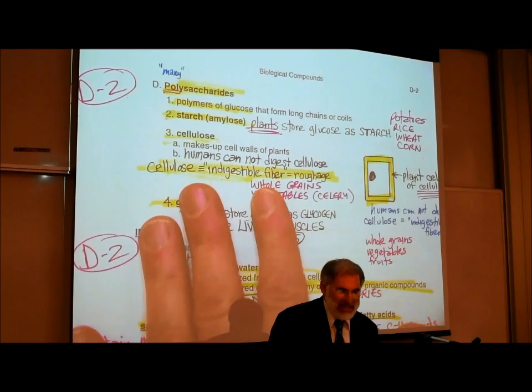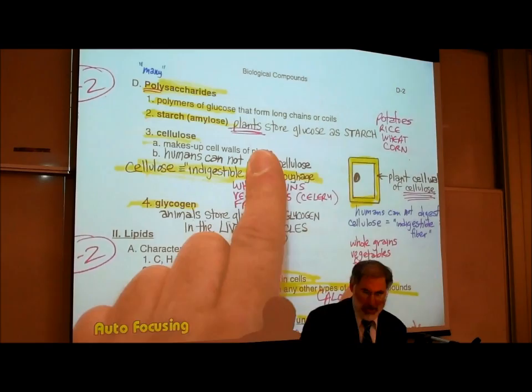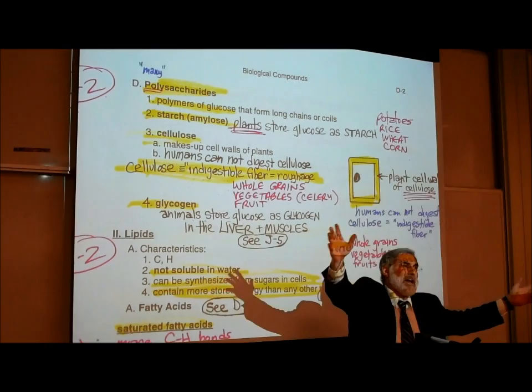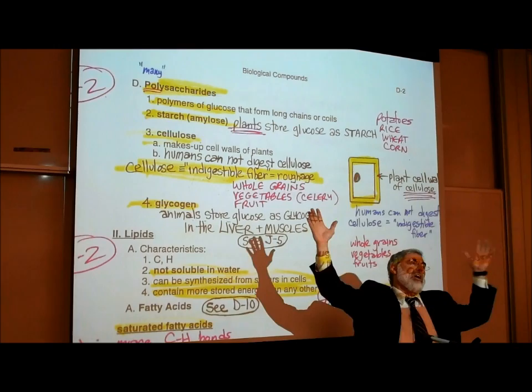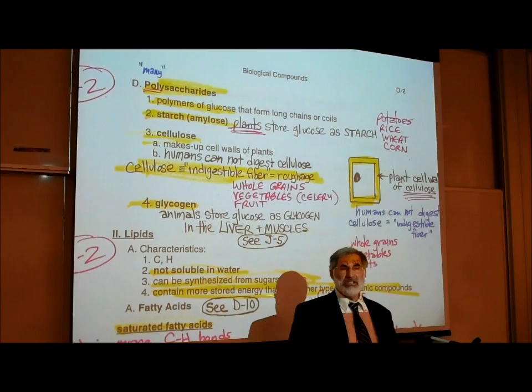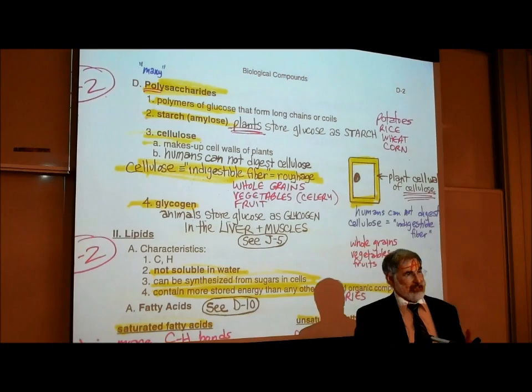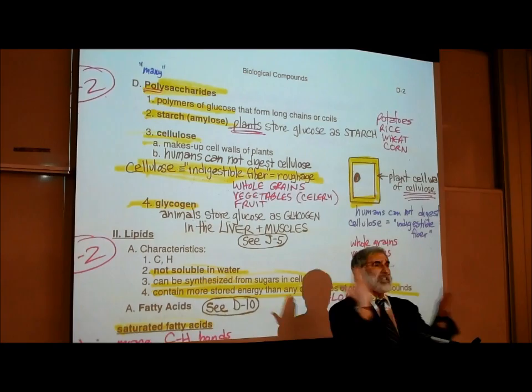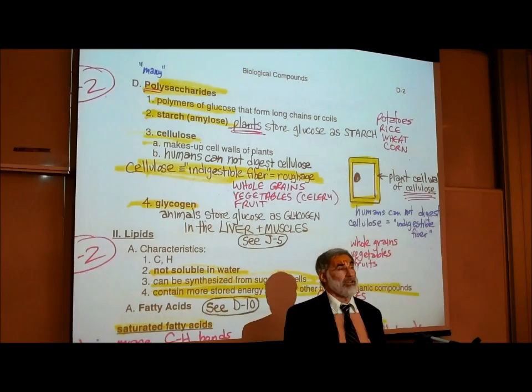Plants store glucose as starch. In the leaves of plants there are chloroplasts, and plants use their leaves to manufacture sugars using sunlight in a process known as photosynthesis — photo means light. As plants make glucose, they join these glucose molecules together into a storage form called starch or amylose.